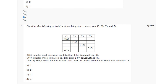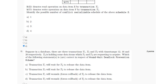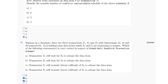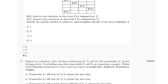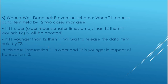For the sixth question, there are three transactions T1, T2, and T3 with timestamps 12, 16, and 20 respectively. We have to find the correct statement with respect to the wound-wait deadlock prevention scheme.